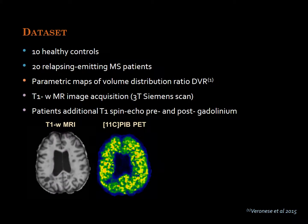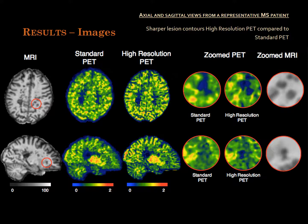In this work, we applied this novel partial volume correction technique to a database comprising 10 healthy controls and 20 relapsing-remitting MS patients. All subjects underwent both MR and PET imaging. These pictures provide an example of the improved image resolution and lesion detectability achieved with the application of partial volume correction compared to the standard PET. The images refer to a representative MS patient. The high-resolution PET images show sharper white matter contours compared to the standard PET. Looking at the zoom area in the red circle, a noticeable improvement in lesion detectability can be appreciated in two representative lesions.